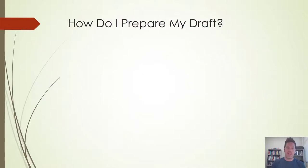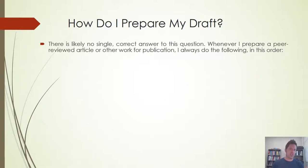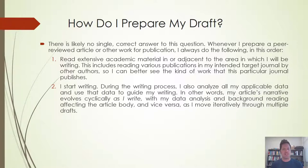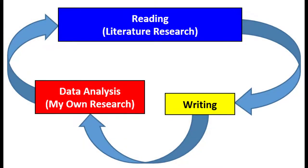How do I prepare my draft? There is likely no single correct answer to this question. Whenever I personally prepare a peer-reviewed article for publication, I always do the following in this order. First, I read extensive academic material in or adjacent to the area in which I'm writing. This includes reading various publications in my intended target journal by various other authors, so I can better see the kind of work that this particular journal publishes. Second, I start writing. During the writing process, I also analyze all of my applicable research data and use that data to guide my writing. My article's narrative evolves cyclically as I write, with my data analysis and background reading affecting the article body and vice versa as I move iteratively through multiple drafts.